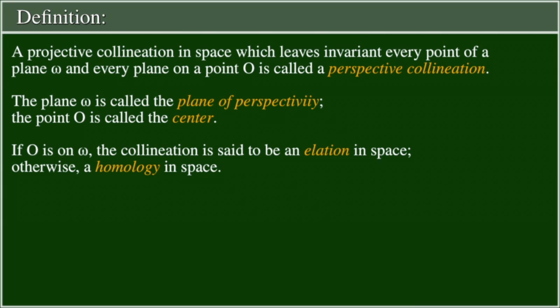Definition: A projective collineation in space which leaves invariant every point of a plane omega and every plane on a point O is called a perspective collineation.